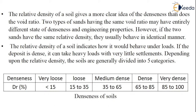The relative density of the soil gives a clearer idea of denseness than the void ratio alone. Two types of sands having the same void ratio may have entirely different states of denseness and different engineering properties. However, if two sands have the same relative density, they usually behave as identical soils.